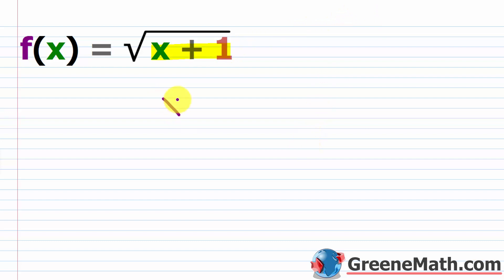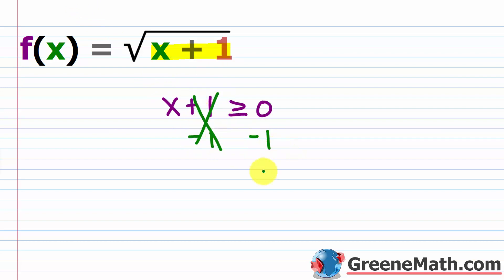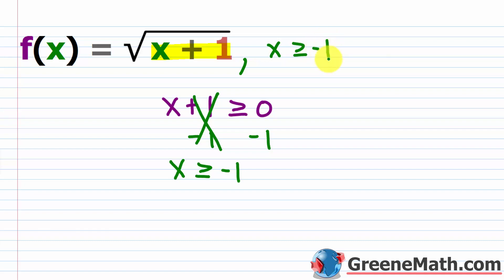So x plus one has to be greater than or equal to zero — square root of zero is zero, that's fine, but it can't be negative. You get square root of negative one, you get into complex numbers, or there's no real solution. From here, I can solve this by subtracting one from each side, and say x is greater than or equal to negative one. So this function is valid for x greater than or equal to negative one.